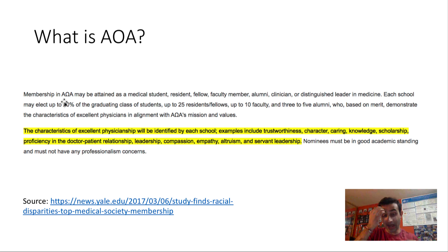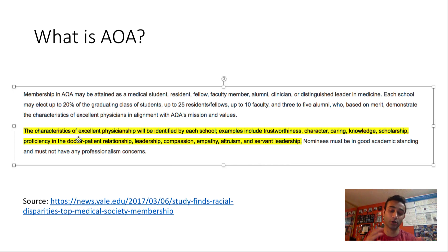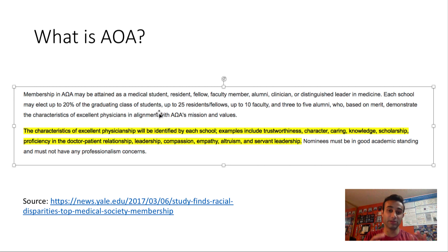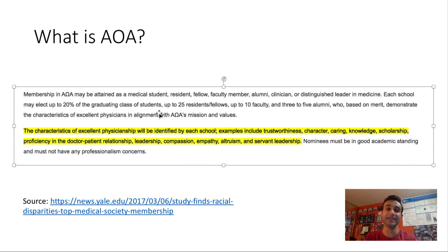I took this from a news article where it says AOA is often determined by certain characteristics such as excellent physicianship — trustworthiness, caringness, knowledge, scholarship, proficiency in doctor-patient relationship, compassion, and more. There's a lot of criteria, but the point is only 20% of the graduating class of students can be elected to AOA. So it's a very exclusive group, which is why I said it's almost like an honor society.